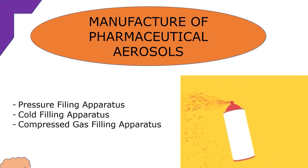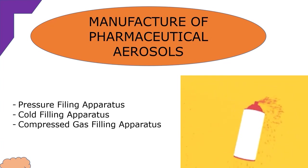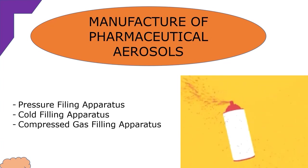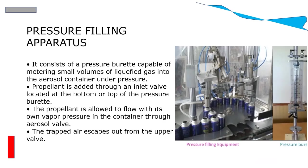Manufacture of pharmaceutical aerosols — methods include: Cold filling apparatus, Compressed filling apparatus, and Pressure filling apparatus. The pressure filling apparatus consists of a pressure burette capable of metering small volumes of liquefied gas into the aerosol container under pressure. The propellant is added through an inlet valve at the bottom or top of the pressure burette and is allowed to flow with its own vapor pressure into the container through the aerosol valve; trapped air escapes from the upper valve.